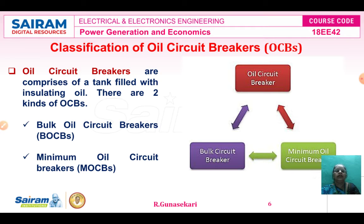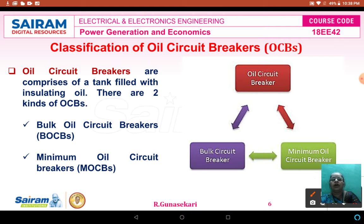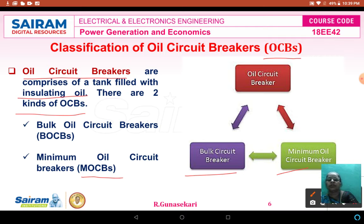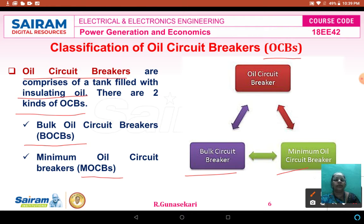This is the classification of the oil circuit breaker. The oil circuit breaker abbreviation is OCB. The oil circuit breaker comprises a tank filled with insulating oil. There are two kinds of oil circuit breakers: one is bulk oil circuit breaker (BOCB) and another one is minimum oil circuit breaker (MOCB). These abbreviations are sometimes used by the exam paper setter.